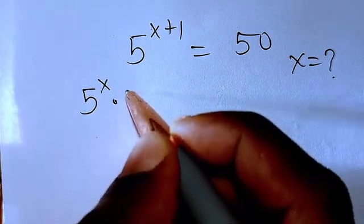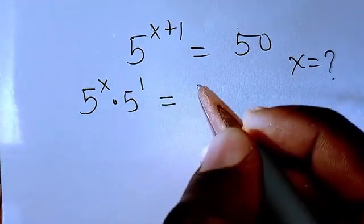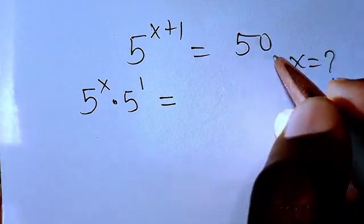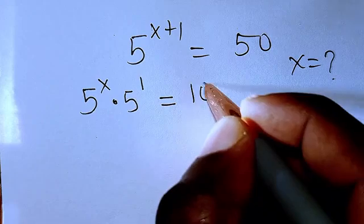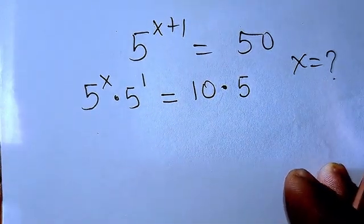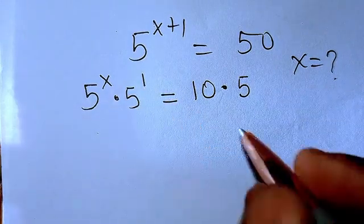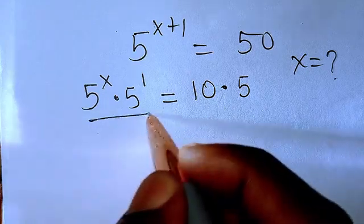Then we have, I can also split this as 10 multiplied by 5 because it will give us 50, right? So from here you know 5 to the power of 1 is 5. So if I divide through by 5, this will cancel.